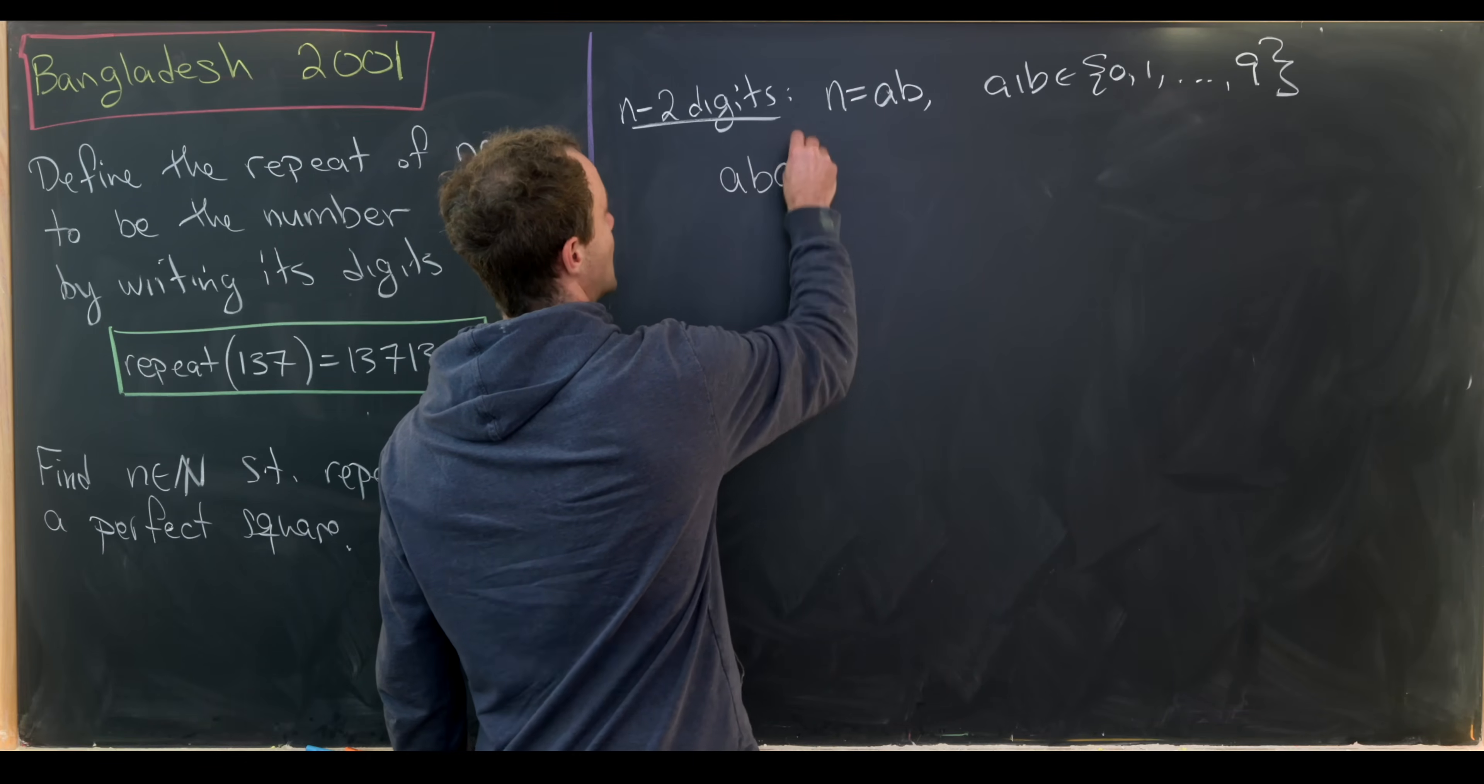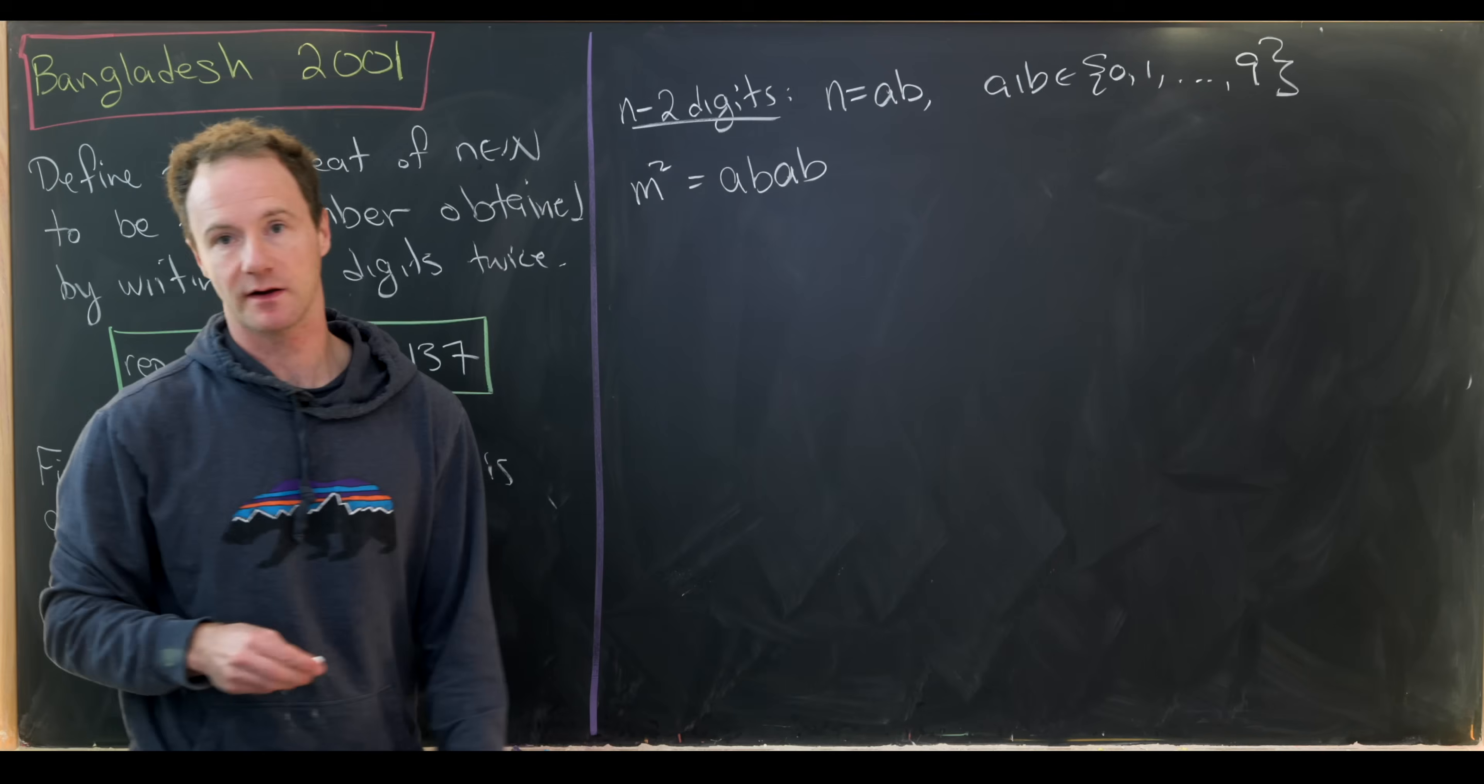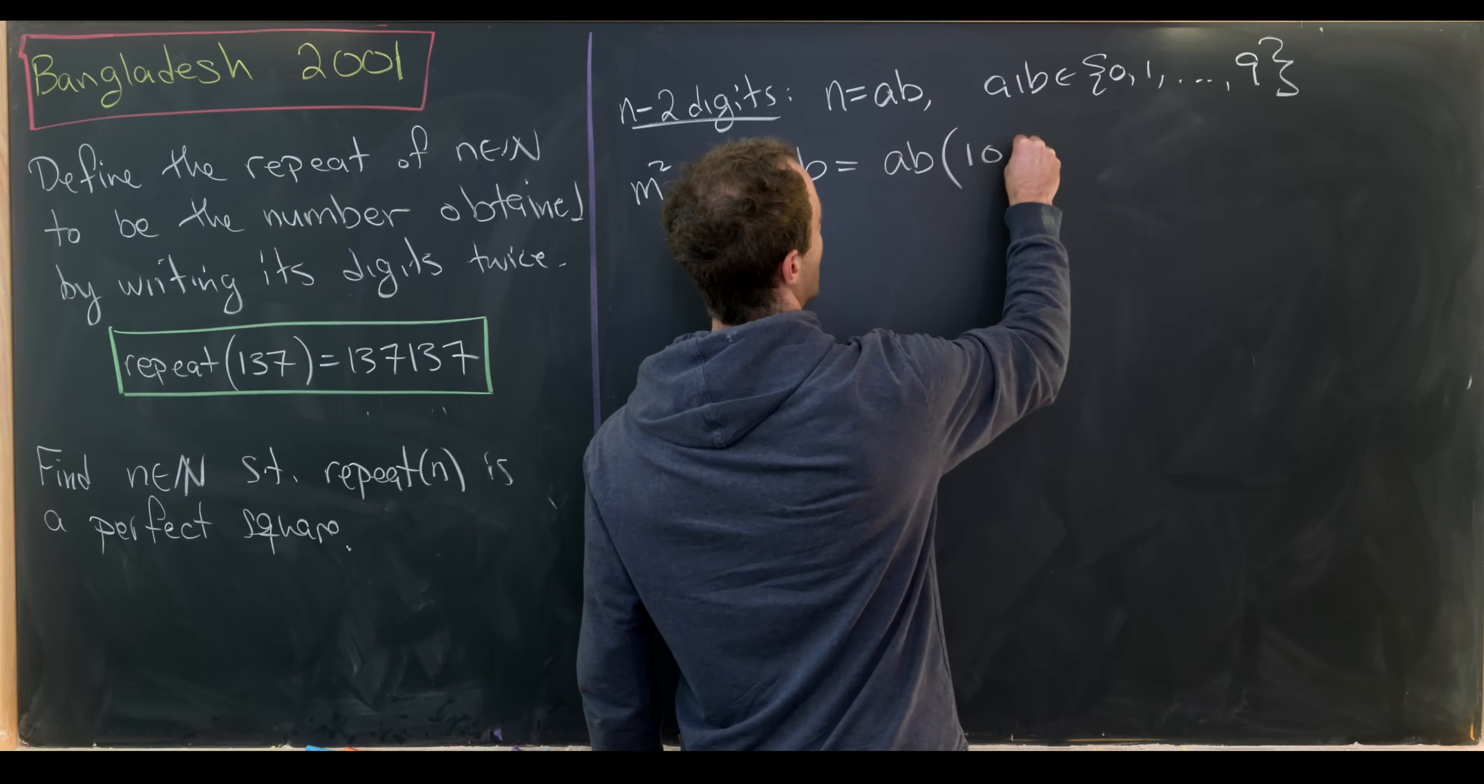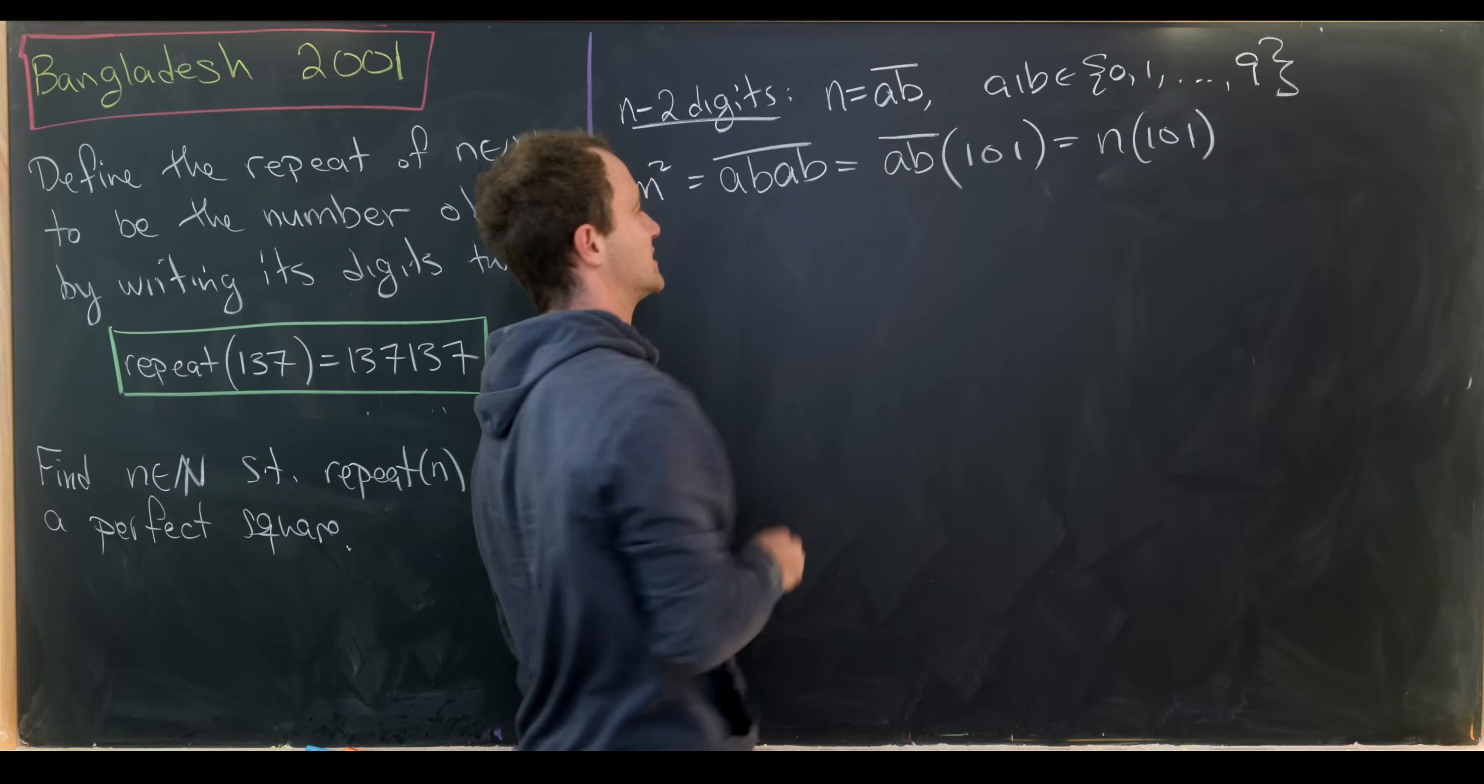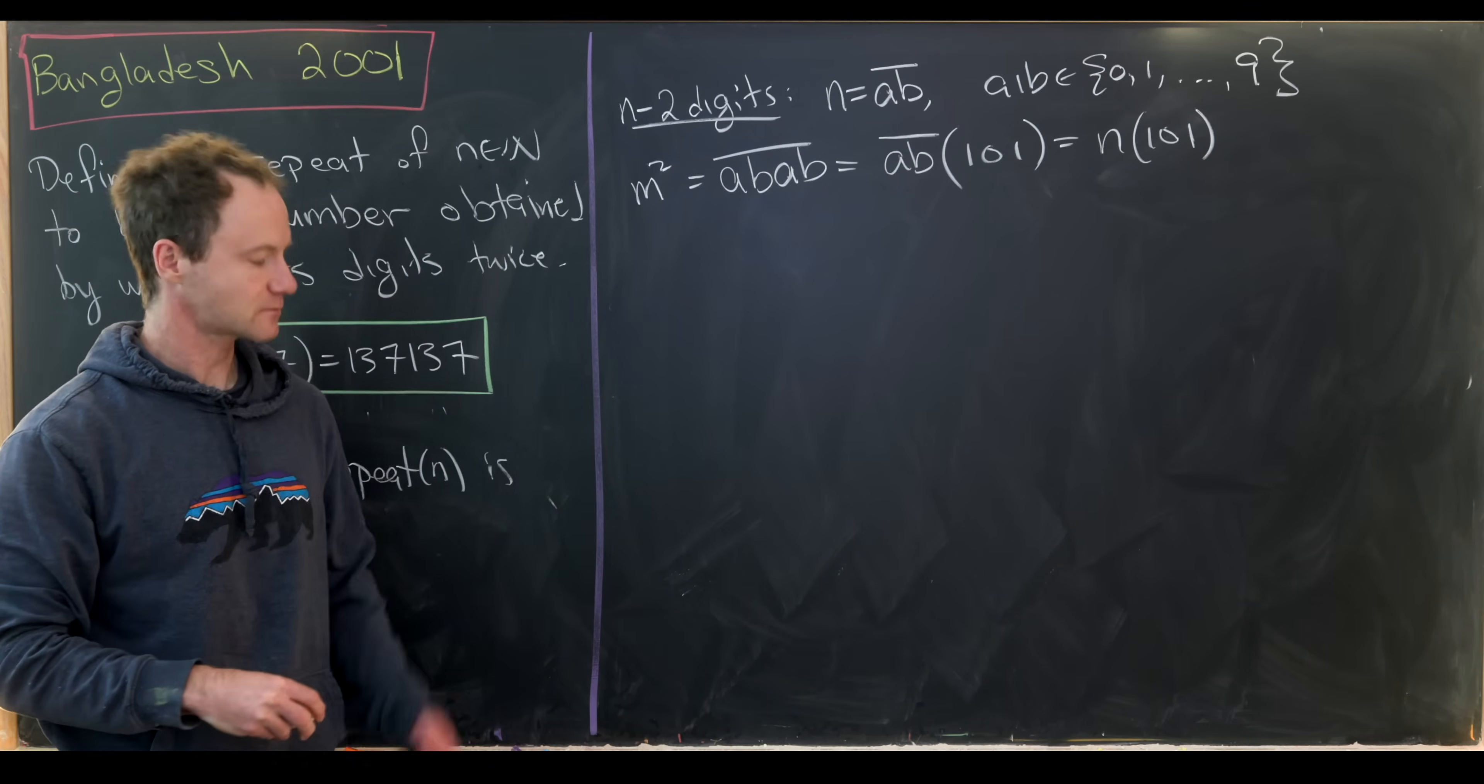So that means we need something like this. We need a, b, a, b to be a perfect square. So it's m squared. But notice this can factor as ab times 101 or n times 101. Maybe we should put a bar over this just to show that those are the digits, not a times b.